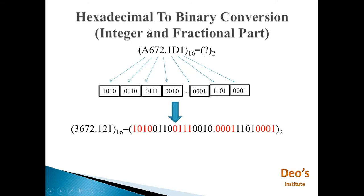For hexadecimal to binary with integer and fractional parts, we do the same. For example A6.71D1: A is 10 represented as 1010, 6 is 0110, 7 is 0111, 1 is 0001, D is 1101, and 1 is 0001. Every digit is represented using its 4-bit binary number and written together to get the binary equivalent.